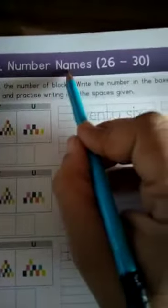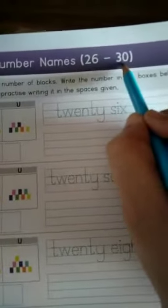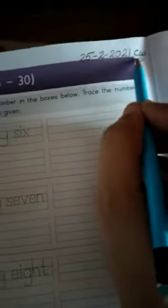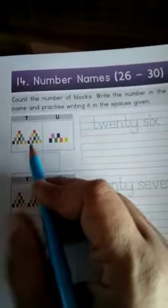Now open page number 18. Here also the topic is number names 26 to 30, and write down date 25-2-2021 and don't forget to write CW. Here also children, we have to do the same as we did on page number 6.